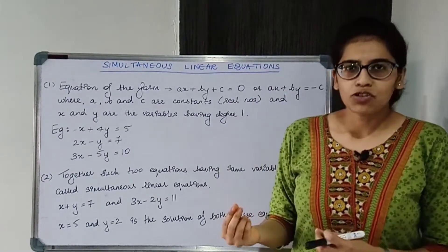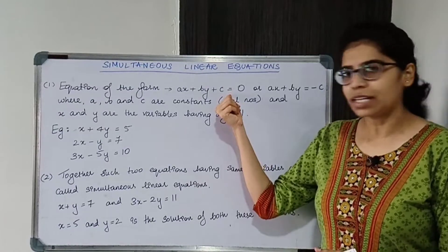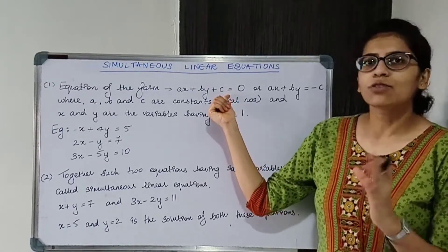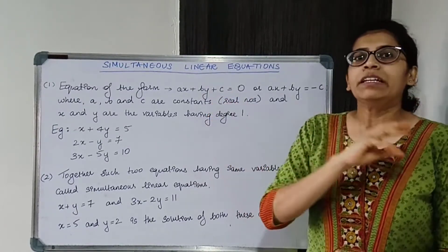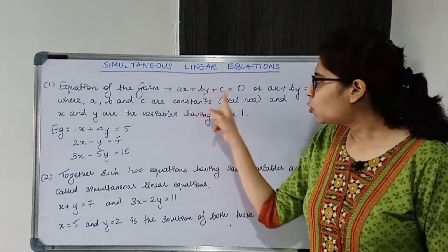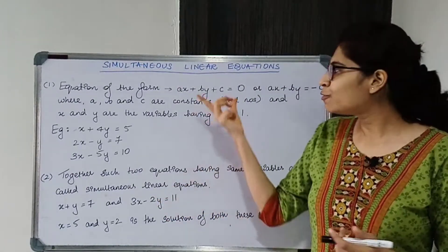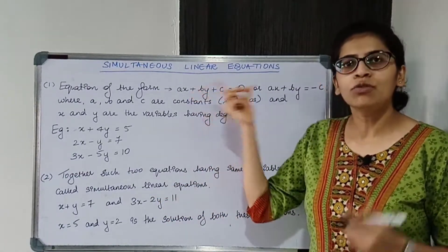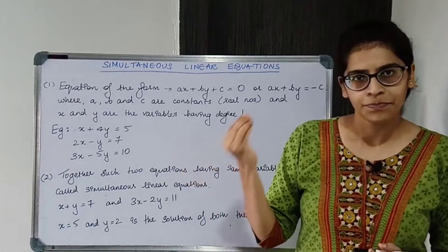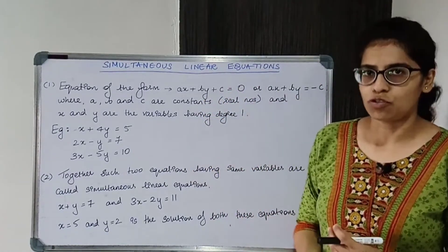Linear equation — 'equation' means there will be an equal to sign, so always keep in mind that an equation will have an equal to sign. 'Linear' means this equation represents a line. With the help of this equation, you can draw a straight line. That is why it is called a linear equation.